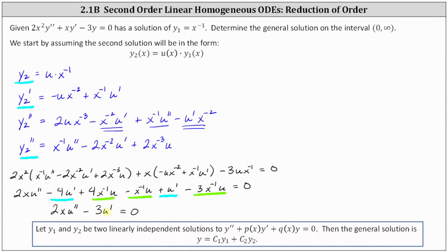From here, because there is no longer a u term in the differential equation, we can perform a substitution. We let w equal u prime and therefore w prime equals u double prime. Performing this substitution gives us the differential equation two x·w prime minus three w equals zero. Notice now we have a first order linear differential equation, which we can solve using separation of variables or integrating factor.